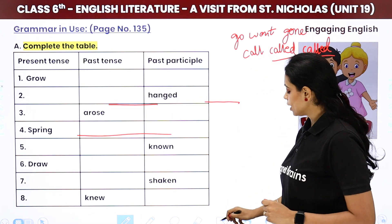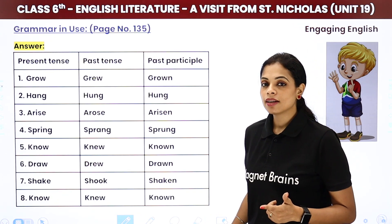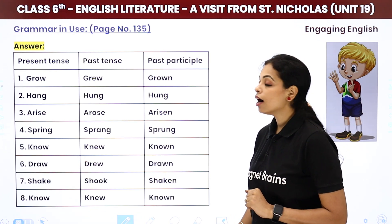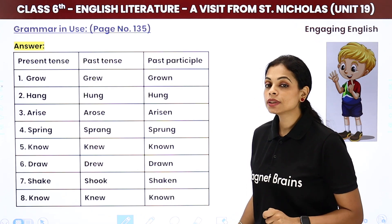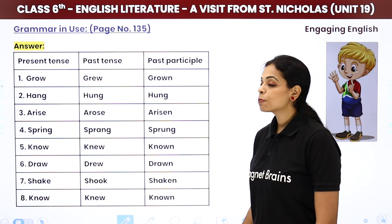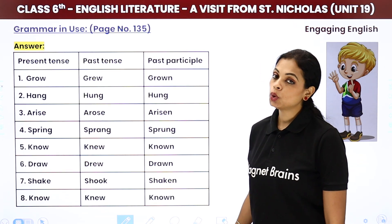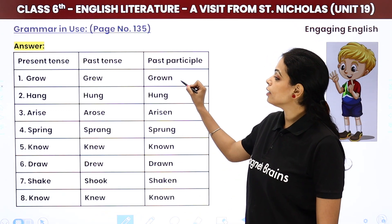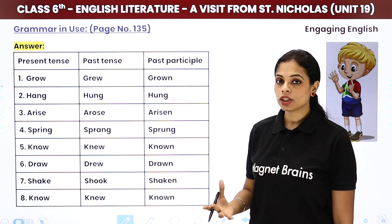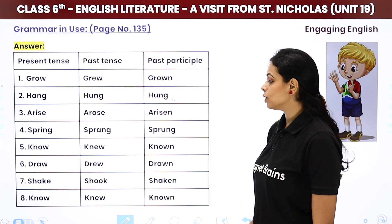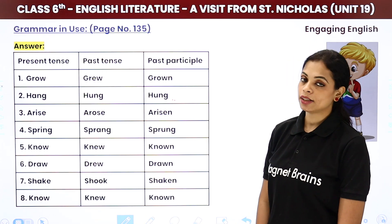Now complete the verb table. Grow/grew/grown — irregular. Hang/hung/hung — irregular, because the form changes without adding -ed or -t. Arise/arose/arisen — irregular. Spring/sprang/sprung — irregular. Know/knew/known — irregular. Draw/drew/drawn — irregular. Shake/shook/shaken — irregular. All of these are irregular verbs.